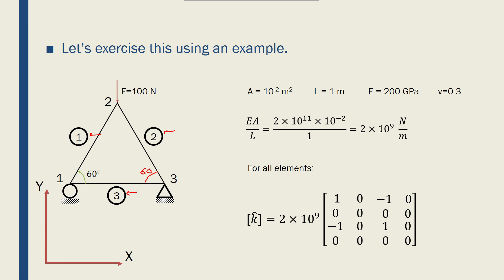All three angles between the bars are 60 degrees each. All bars are at length L, all bars have a cross-sectional area of 1 meter squared, a Young's modulus of 200 gigapascals, and a Poisson's ratio nu of 0.3. One thing I know I will need for the stiffness matrix of a single truss element is EA over L, so let's calculate that since it's constant for all elements: 200 GPa is 2×10¹¹, A is 10⁻² m², and L is 1, giving EA/L = 2×10⁹ N/m.